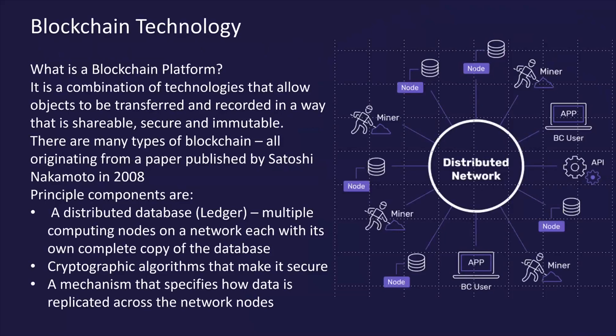So what is blockchain? Effectively it's a combination of distributed computing technologies that allow objects to be transferred in a peer-to-peer network. An object can be anything that can be digitally represented — a document, a design spec, video, or process parameters from a manufacturing process associated with a product. That data or those details are passed from one party to another in what's called a transaction, which ensures the secure transfer of ownership of that data or digital artefact between two parties.